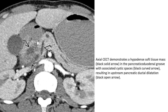Another case. This is also an axial contrast-enhanced CT demonstrating a hypodense soft tissue mass — indicated by the black slit arrow — in the pancreaticoduodenal groove, with associated cystic spaces indicated by the black curved arrow, resulting in upstream pancreatic ductal dilatation indicated by the black open arrow.